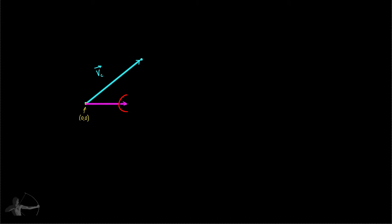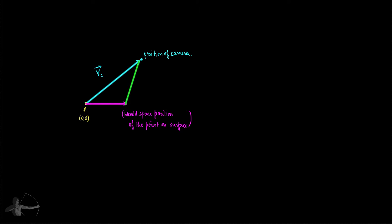This is the point from where we will have to calculate the world space view direction. This is the world space position of the point on the surface, and this point here is the position of the camera. This green vector is what we need. How we calculate this is based on vector calculations we understood in previous chapters, but we will be a little more intuitive this time.